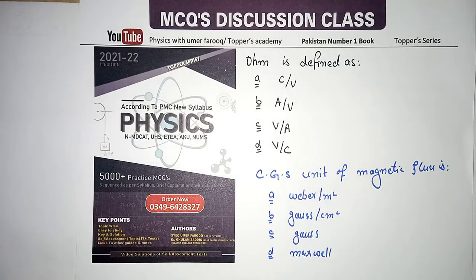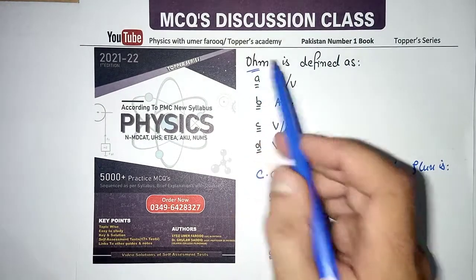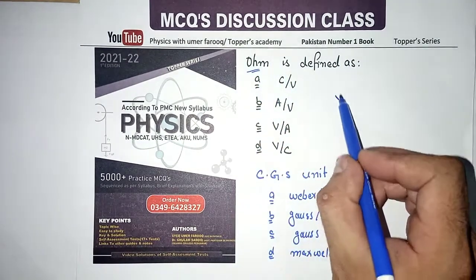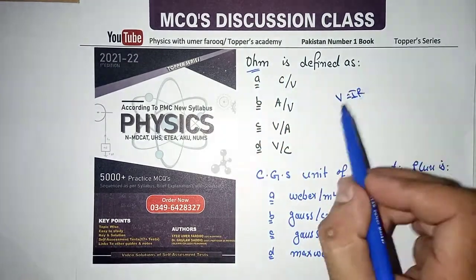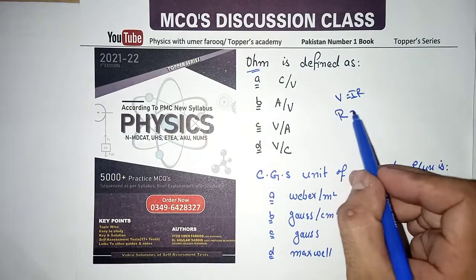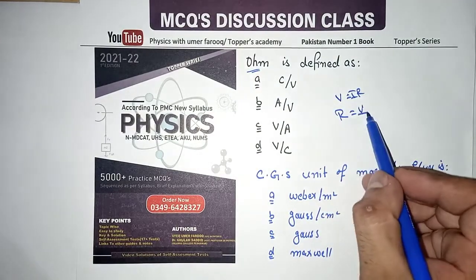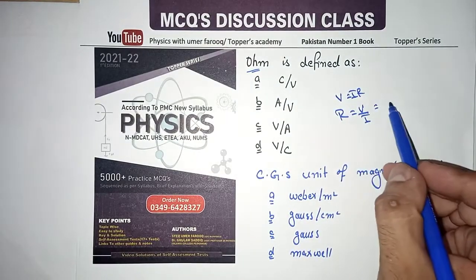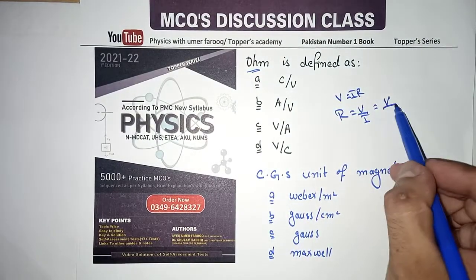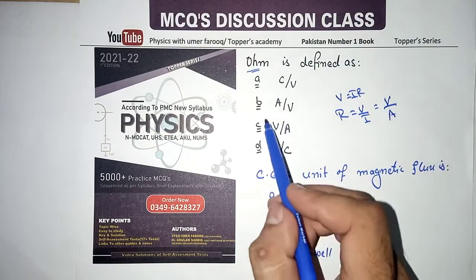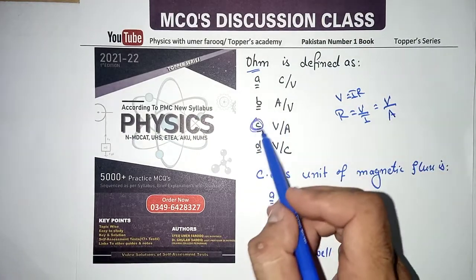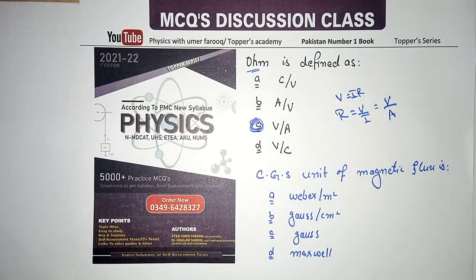Next MCQ: ohm is defined as coulomb per volt, ampere per volt, volt per ampere, or volt per coulomb? Ohm is the unit of resistance. V = IR, so R = V/I — volt per ampere. Therefore the correct option is option number C.